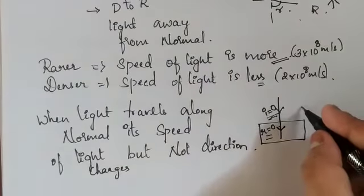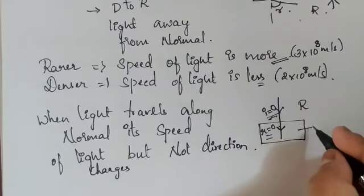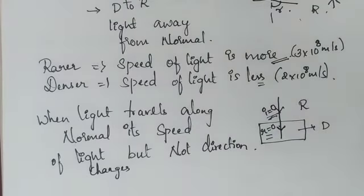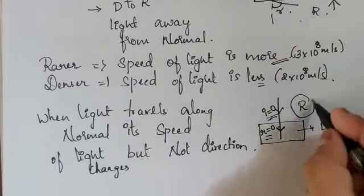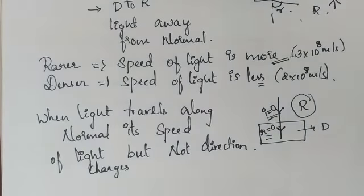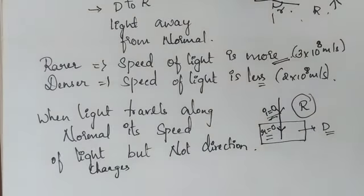Because this is the rarer medium and this is the denser medium. When light travels from rarer medium to denser medium, there is a change in speed of light. The speed of light in the rarer medium is more compared to the speed in the denser medium.